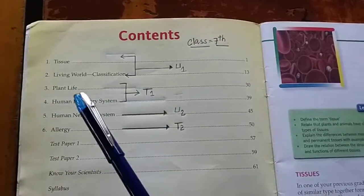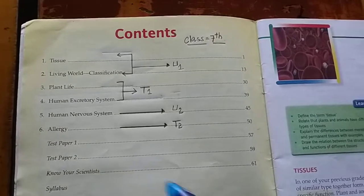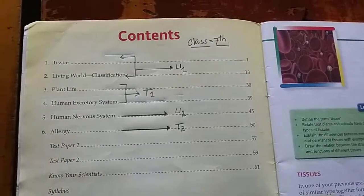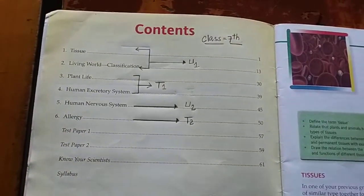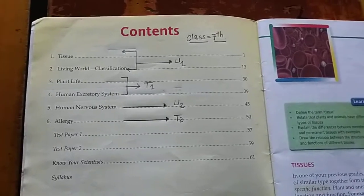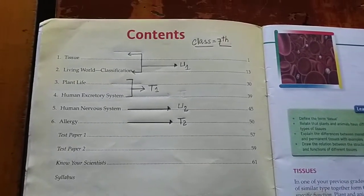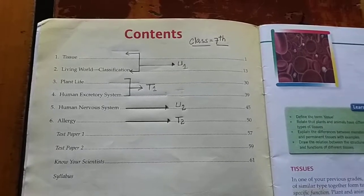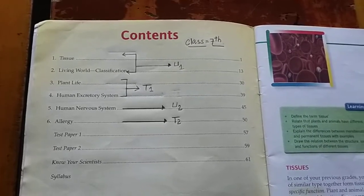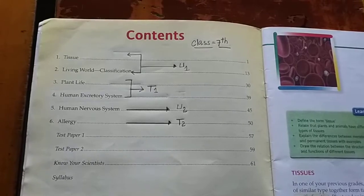The third chapter is Plant Life. Here you have to focus on the nutrition of plants, the autotrophic mode of nutrition, and the process by which green plants synthesize their own food material, photosynthesis. You have to discuss photosynthesis and respiration of plants in this very chapter.